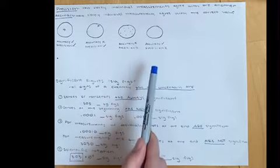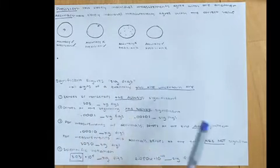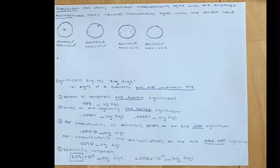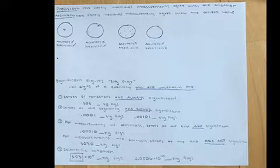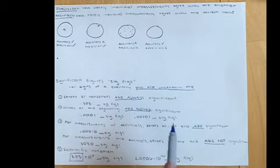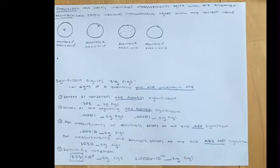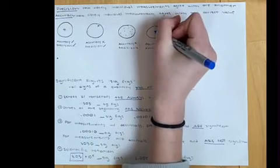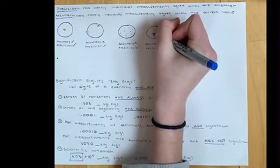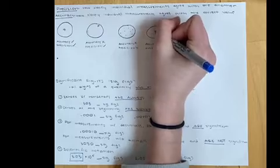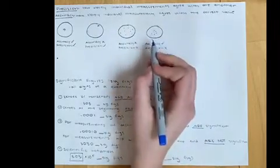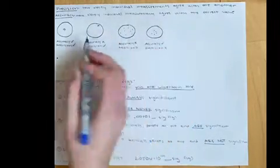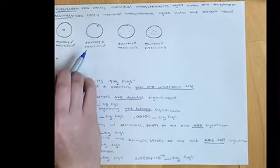For high accuracy and low precision, the individual measurements agree with the correct value, but they're not necessarily all close together. So on average they would be around the center or correct value, but not necessarily super close to each other like those with high precision.